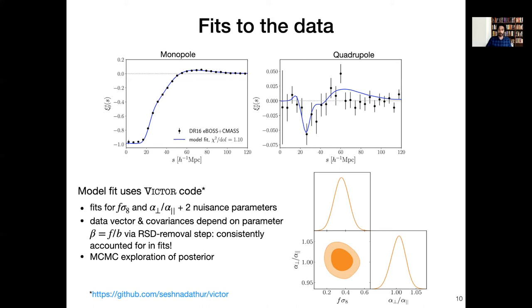The constraints that we get are shown on the bottom left here, and one thing that you can see is that there is only a weak correlation between constraints on the growth rate f sigma 8 and the ratio of the alpha parameters.